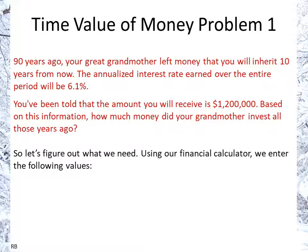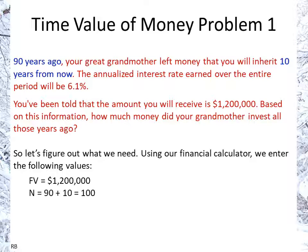Using a financial calculator, we can enter and label the values that are given. The $1.2 million is the future value. The money was left 90 years ago, but you'll be receiving it in 10 years, so the total number of periods in years is 100. And the 6.1% is the interest rate per period, annualized.